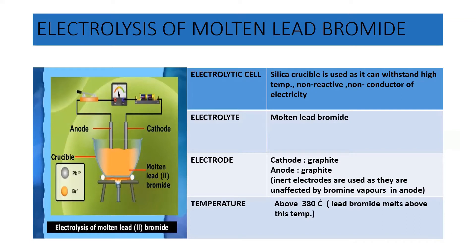During this process, the electrolytic cell is made up of a silica crucible. Silica crucible is used to withstand high temperature because we are going to heat this around 380 degrees Celsius. The silica crucible is non-reactive and a non-conductor of electricity. The electrolyte used is molten lead bromide.